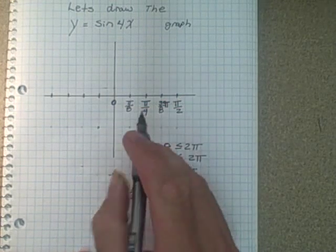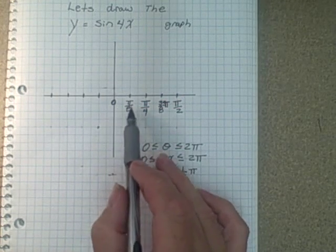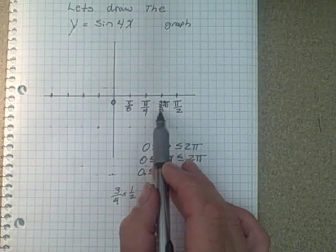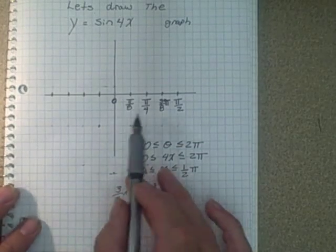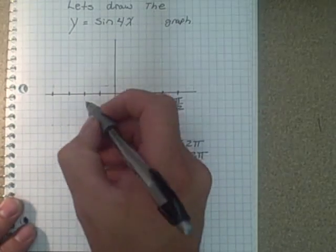So you can see that we are, as we're going, we're adding an eighth. Add an eighth, that would give you a quarter. Add an eighth, that would give you 3 eighths. Add an eighth, that would give you a half pi. So this would follow the same path here.